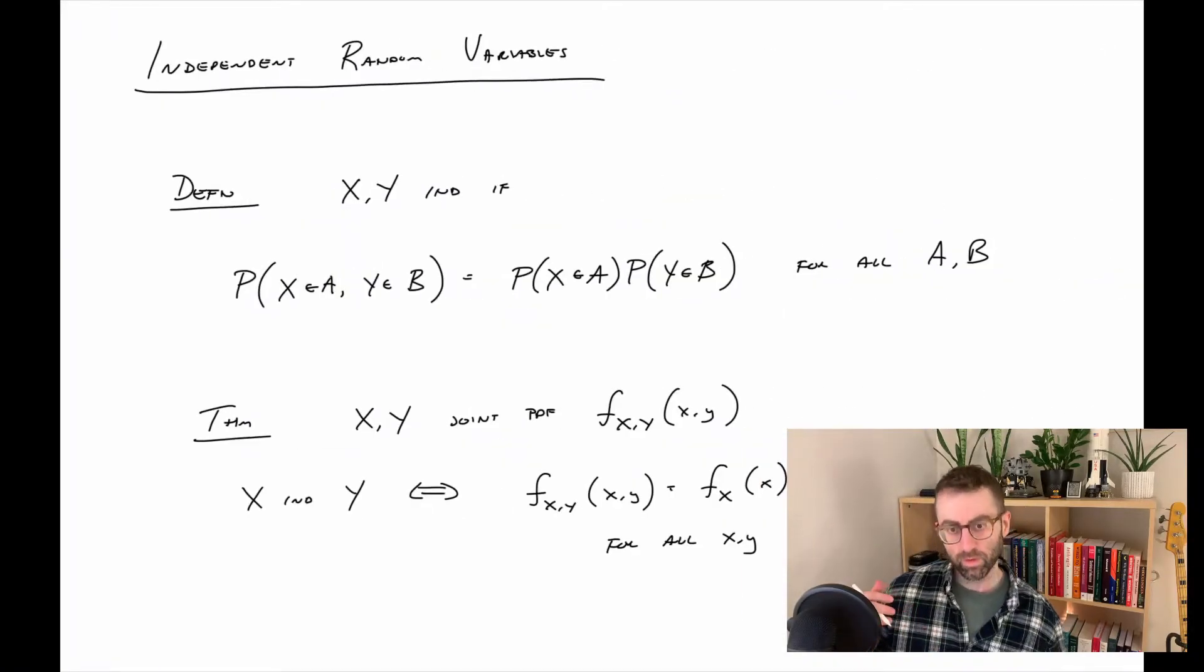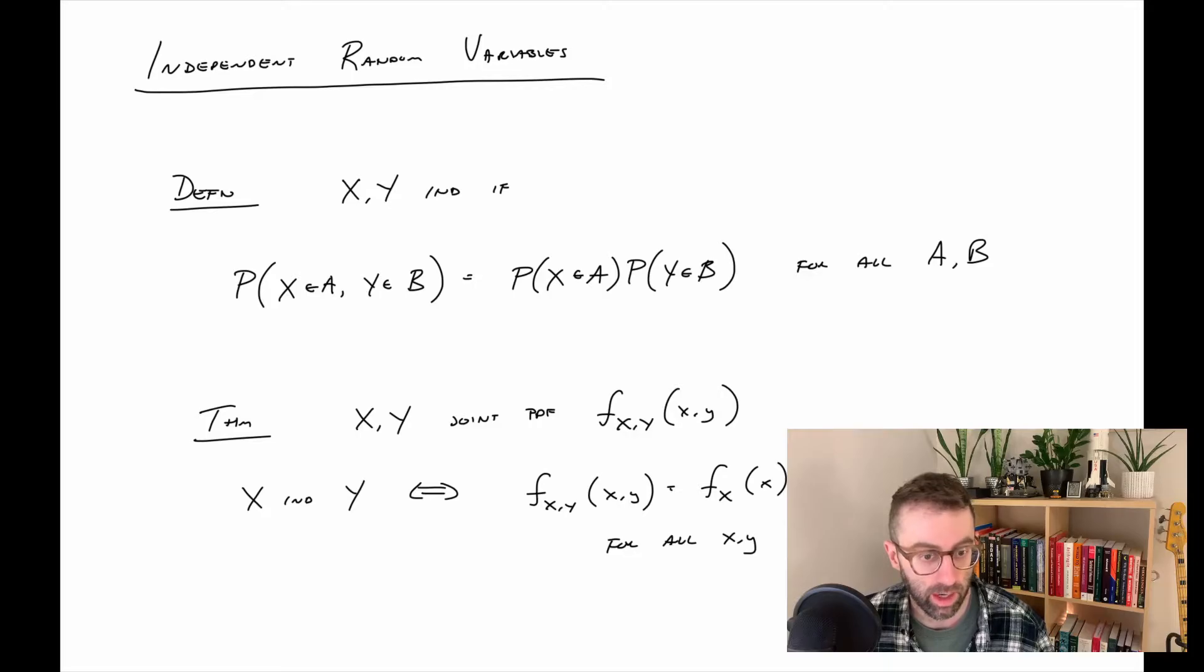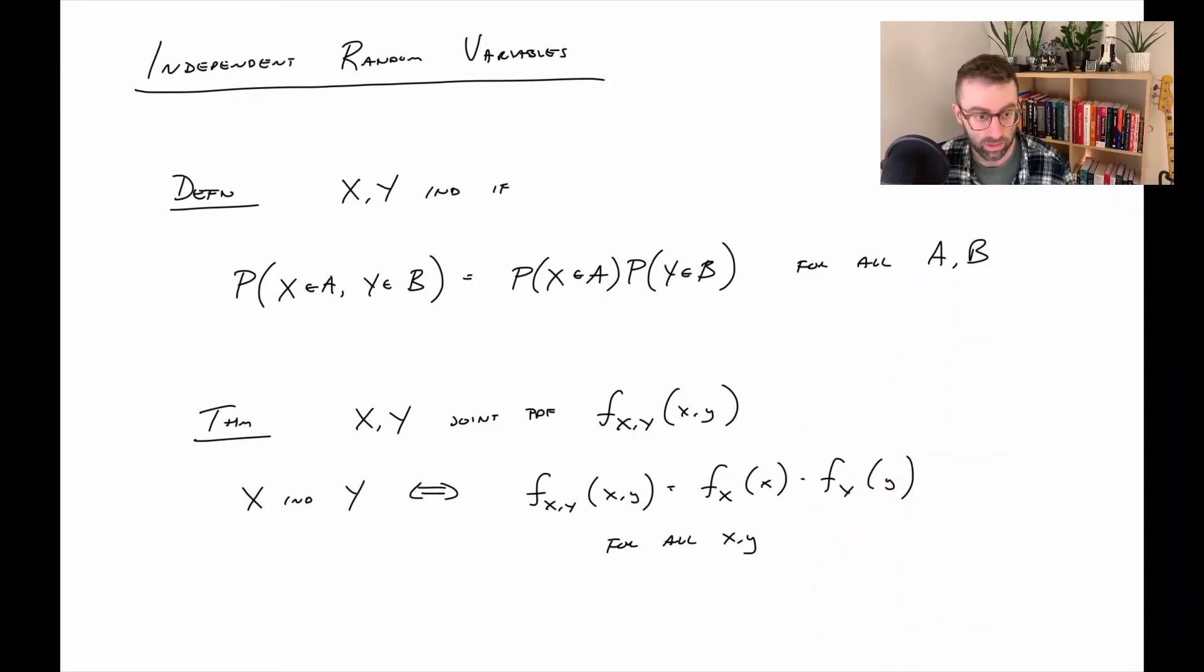We can then talk about independent random variables. Random variables X and Y are independent if you can take an AND probability given the joint and make it the product of the two marginal probabilities. This theorem says that X and Y are independent if and only if the joint is equal to the product of the marginals for all X and Y. Independence will come up again when we get to one of the more important concepts in the course.